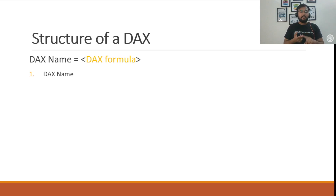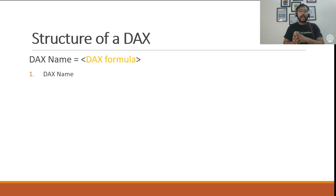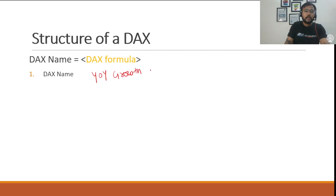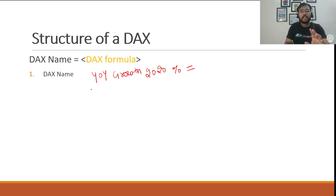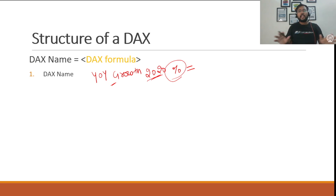The user has total leverage to give any name to the DAX equation they are writing. The user can use alphabets, numericals, special characters, and white spaces. For example, to calculate year-over-year growth with respect to 2020, I can create a DAX and give a name like: 'Year over year growth 2020 %'. This is our DAX name — you can see it uses alphabets, white spaces, numericals, and special characters.